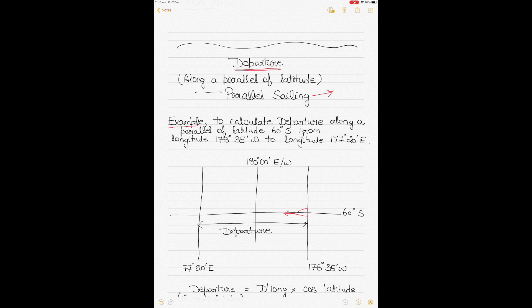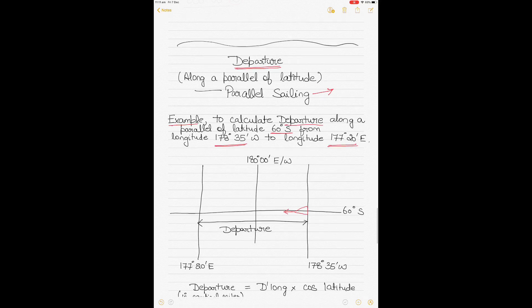Here the example requires us to calculate the departure along a parallel latitude of 60 degrees south from the longitudes if the vessel is traveling from 178 degrees 35 minutes west to a longitude of 177 degrees 20 minutes east.